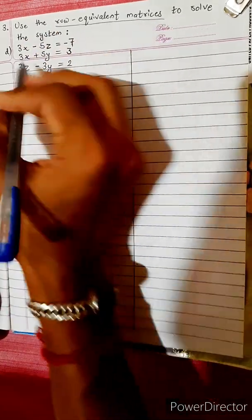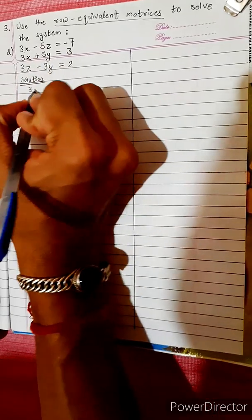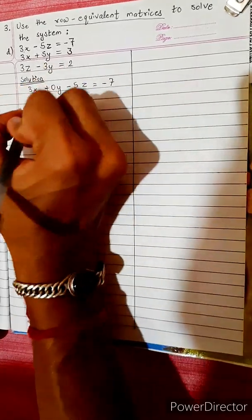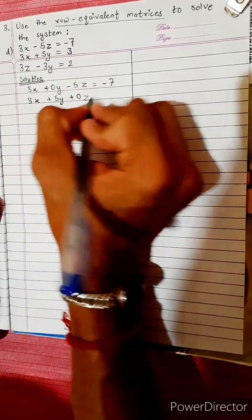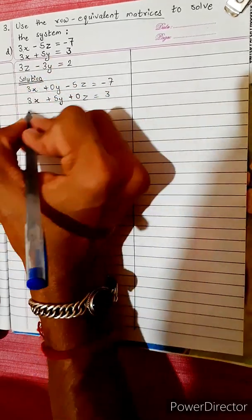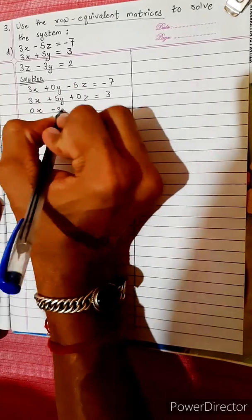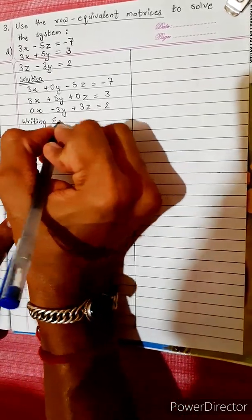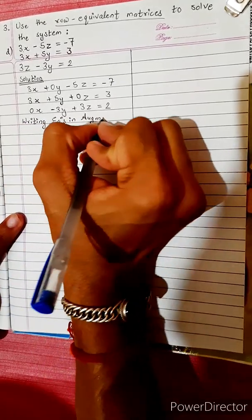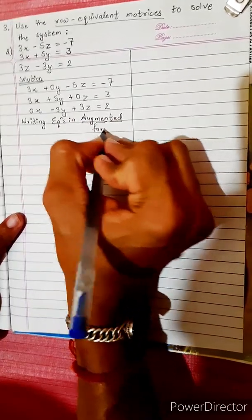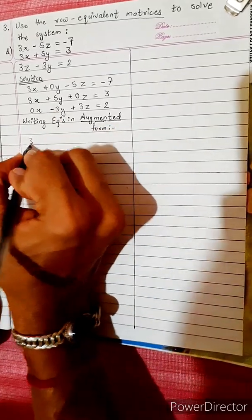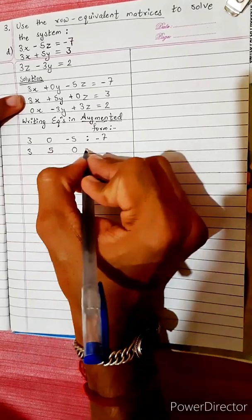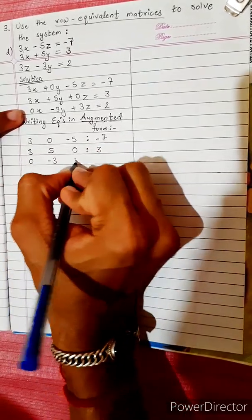We will use Row Equivalent Matrices. We start with the system of equations: 3x + 0y - 5z = -7, 3x + 5y + 0z = 3, and 0x - 3y + 3z = 2. Writing the equations in augmented form, we get the matrix: [3, 0, -5 | -7], [3, 5, 0 | 3], [0, -3, 3 | 2].